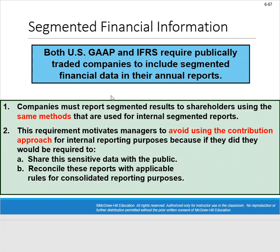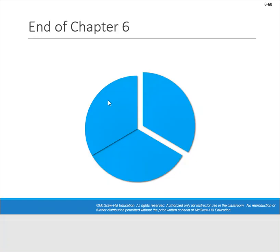That's chapter six. I hope you've learned the difference between variable costing and absorption costing approaches, how to compute unit product cost, and the purpose of segmented income statements and how to use them. Good luck with chapter six — let me know how I can help.